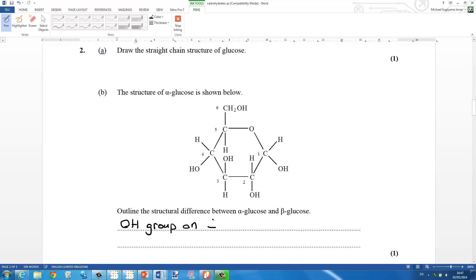Moving on to part B, the structural difference. Again, this is the OH group on carbon 1 is on the opposite side of the ring. So we have two different structures, alpha and beta glucose.